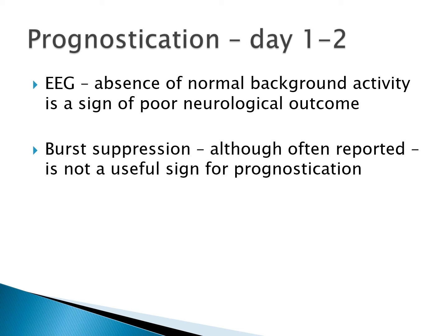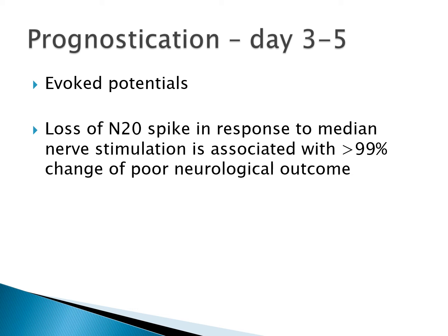Over the first couple of days, neurophysiological testing can be of use. EEG — looking for the absence of normal background wave activity — is a sign of poor neurological outcome, and in studies it has been well in excess of 95% sensitive for poor neurological outcome. Burst suppression is something that's often reported following cardiac arrest but is not considered to be a useful sign for prognostication. Evoked potentials can also be used, typically around day three to five — loss of the N20 spike in response to stimulation of the median nerve is associated with a more than 99% chance of a very poor neurological outcome. However, not all hospitals have access to on-demand neurophysiological testing, and very few will have access to on-demand evoked potential testing, especially in a busy intensive care unit, so although very useful, it is not necessarily applicable to all of our patients.